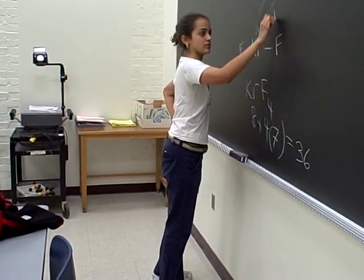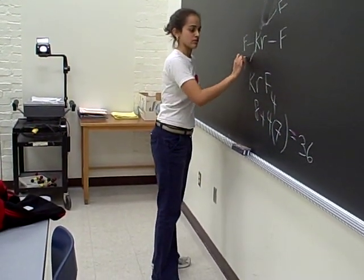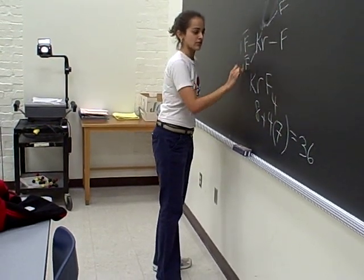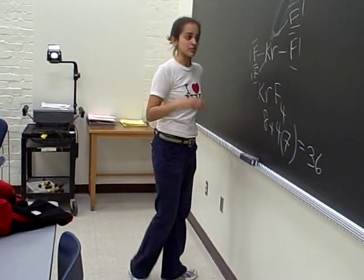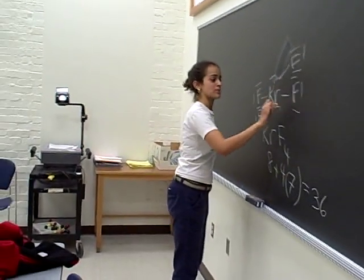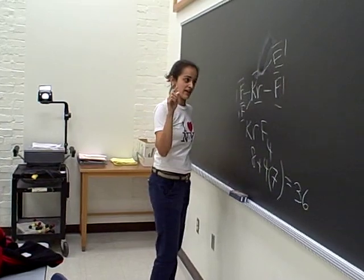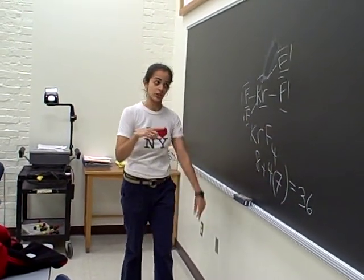So if we draw out krypton chloride and fill in all the valence electrons, we find that we have 4 that we need to put on. So krypton is going to expand its octet, and then this is what our final structure would look like.